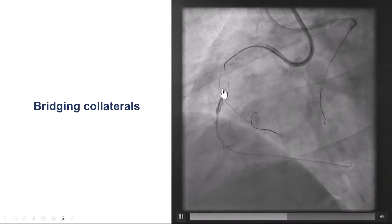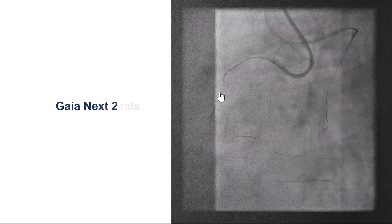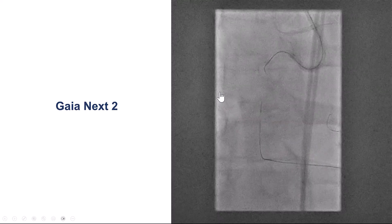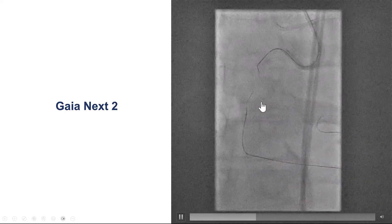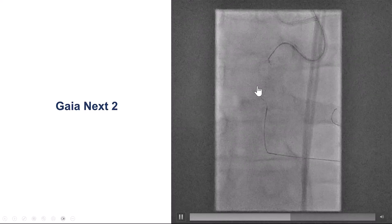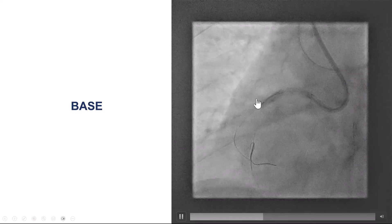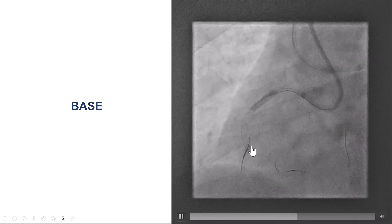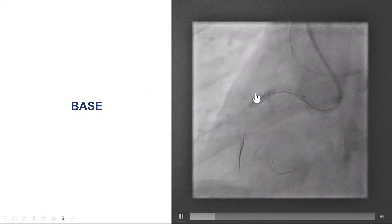We tried with different guide wires, but the wires kept entering that branch. We switched from a polymer-jacketed wire to a Gaia Next 2 wire, which seemed to go initially in the right course, but eventually we were unable to get through. With neither the proximal nor the distal cap penetrable, we decided to move to the third step: antegrade dissection and reentry.